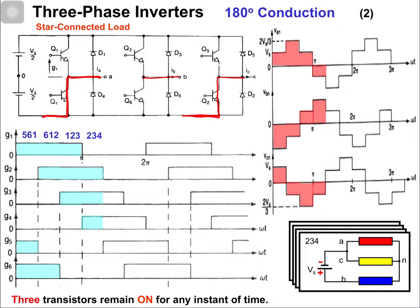So this one is positive, and these two are negative. The resulting voltages are: vbn = (2/3)Vs, van = -(1/3)Vs, and vcn = -(1/3)Vs.